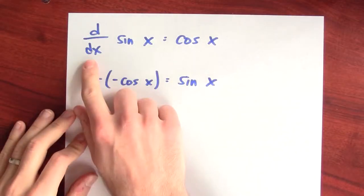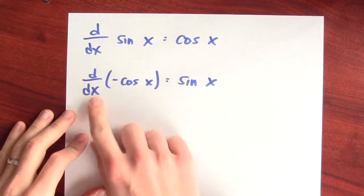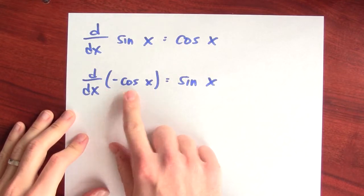How do I anti-differentiate trig functions? Sine and cosine are easy if we just remember their derivatives. The derivative of sine of x with respect to x is cosine x, and the derivative of negative cosine is sine.